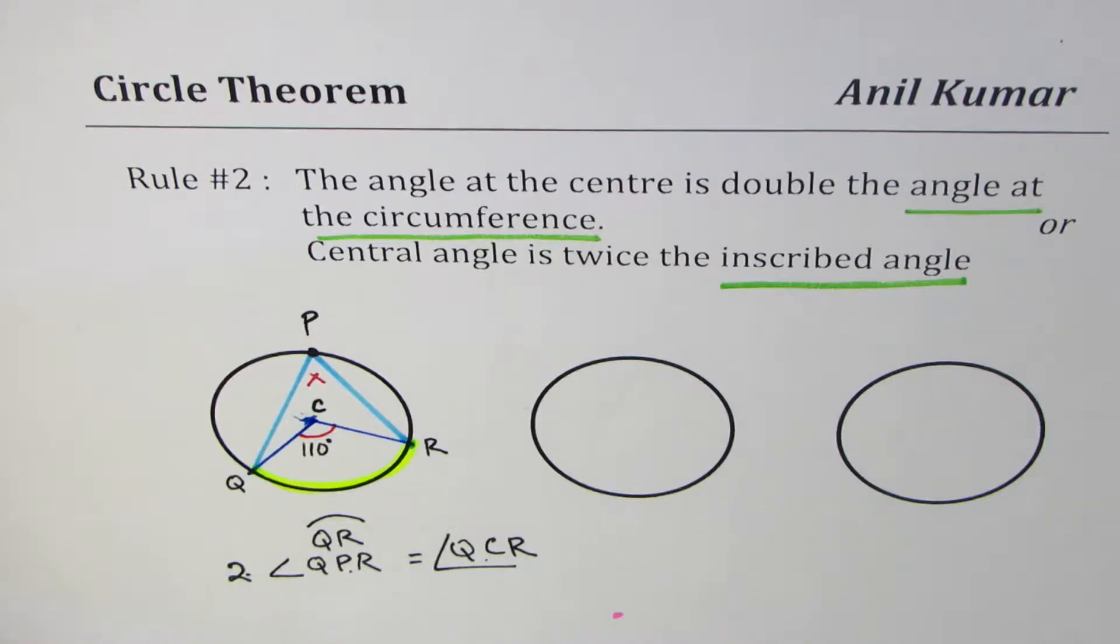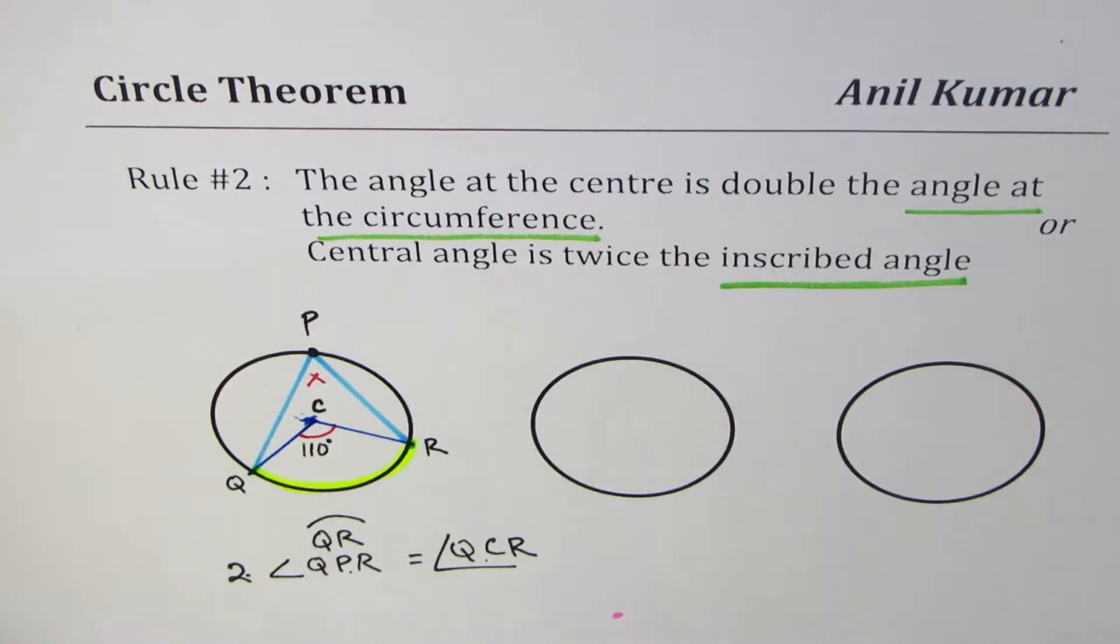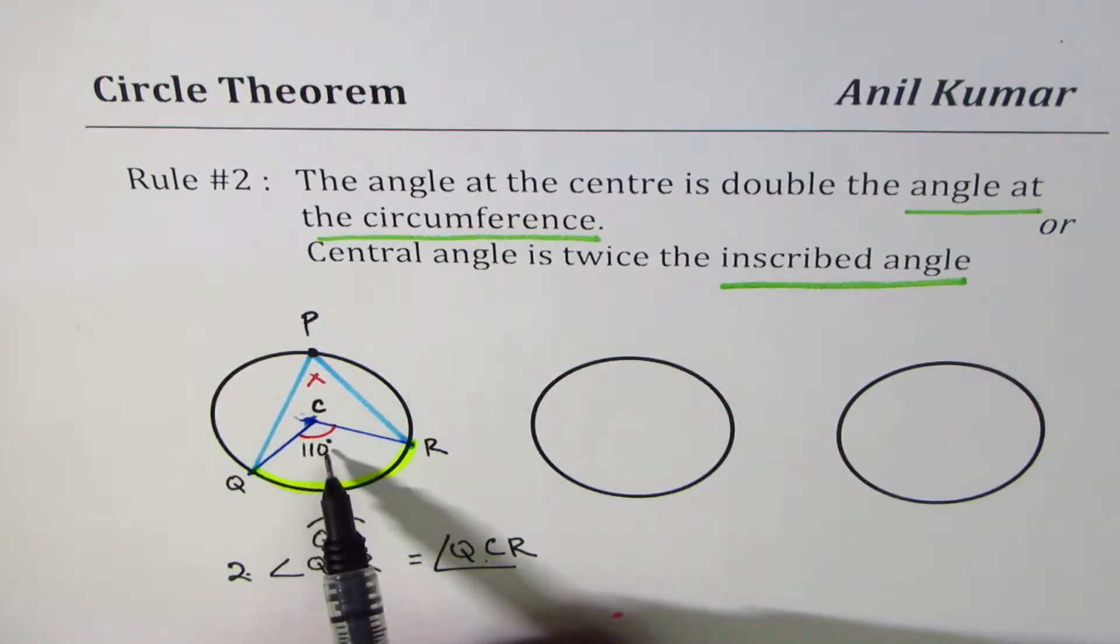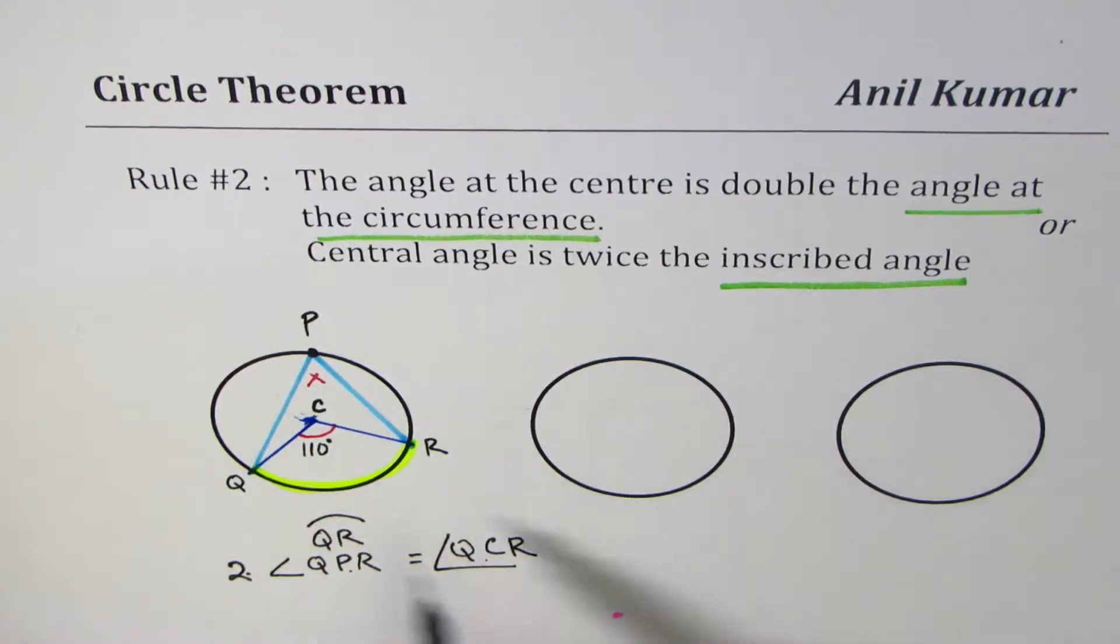Now, based on this, we could have some questions. We already have one here. We are given the central angle of 110. You need to find the inscribed angle X. So from this rule, you know,